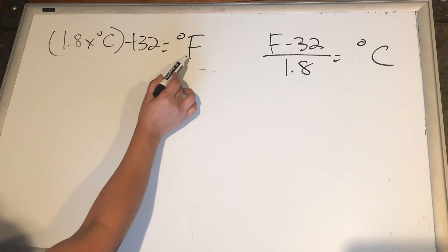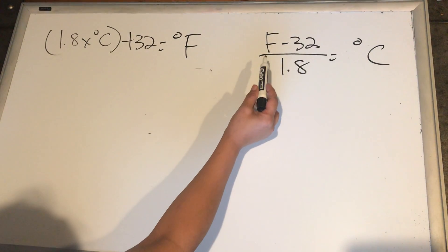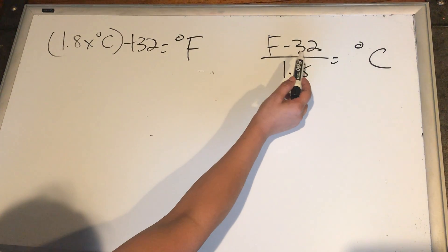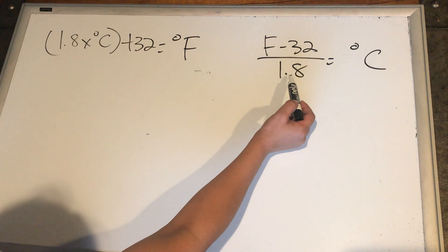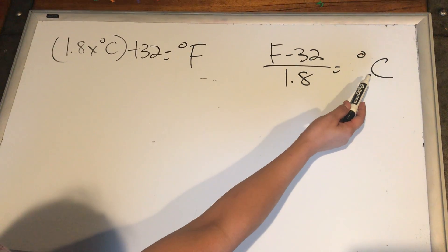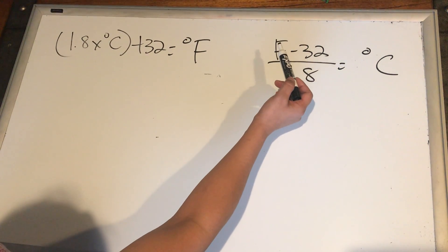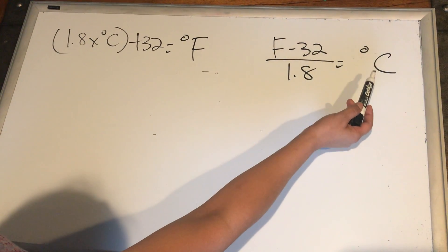So if you start off with Celsius, we have to end with Fahrenheit. And then here is Fahrenheit minus 32 divided by 1.8, and then it equals to Celsius. So if you start off with Fahrenheit, you have to end with Celsius.